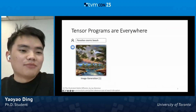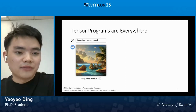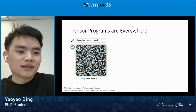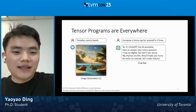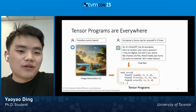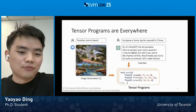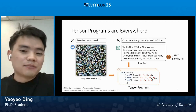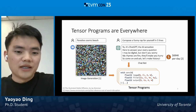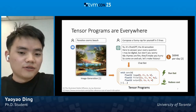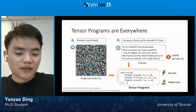With the development of deep learning, there are more and more interesting applications getting accessible to the public. For example, we can draw a picture with a simple description or chat with a chatbot in our daily language. Each run of this application, there will be a bunch of tensor programs run under the hood. However, it's very expensive to serve such an application if there are many users, so it's very important to run it fast to have better user experience and reduce cost.